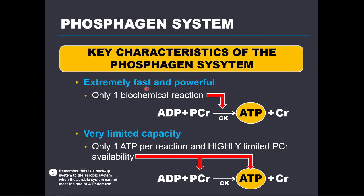The net yield from one phosphocreatine through the phosphagen system is one ATP — but you get that ATP very, very fast. This also means there are highly limited phosphocreatine levels in the muscle. During post-anaerobic threshold exercise, especially toward maximum intensity, phosphocreatine levels deplete relatively fast. On the upside, phosphocreatine resynthesis is also a fast process, so in between sets or during post-exercise recovery, phosphocreatine levels are usually replenished quite efficiently. Please be sure to know all the detailed characteristics of the phosphagen system for the exam.